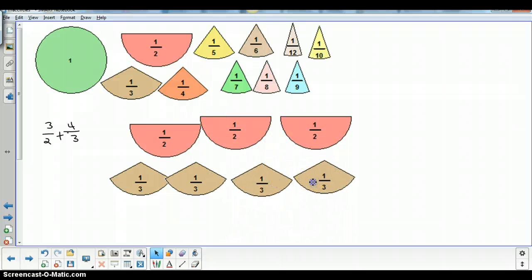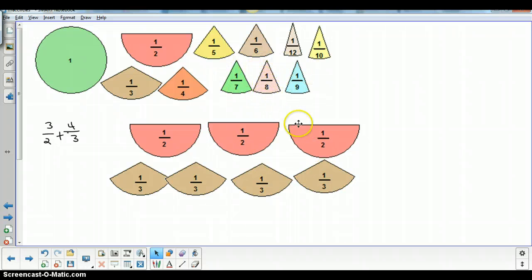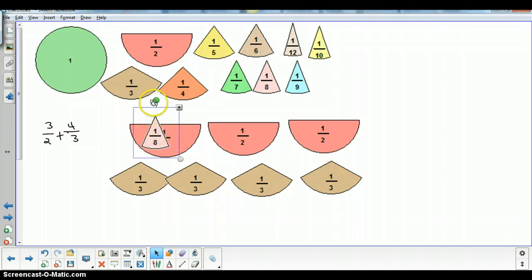And now what we need to do is find, with one of our other fraction circle pieces, a piece that will fit into both. So let's try an eighth and see if this will work. Well, it looks like an eighth will fit. So we have 4 eighths and 1 half.